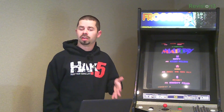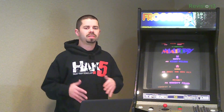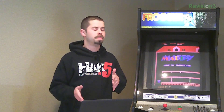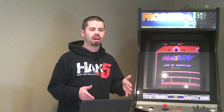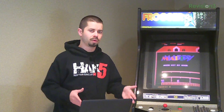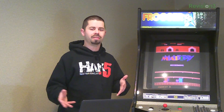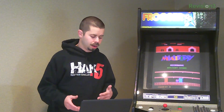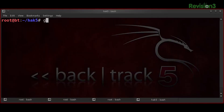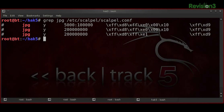Scalpel is driven by a configuration file. The configuration file specifies formats that you're interested in and the header and, optionally, footer bytes that define that particular format. If we were interested in carving out JPEG files out of a file system, we can go ahead and grep JPEG out of the Scalpel config file, and we can see the header and footer bytes defined for that format.